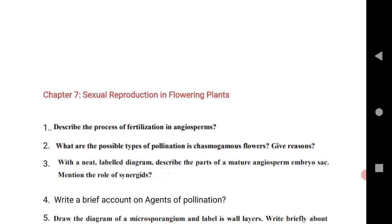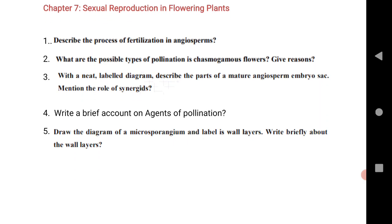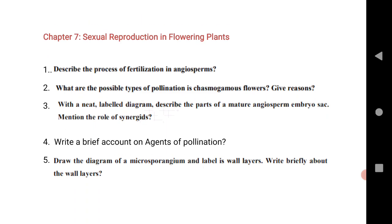Next is seventh chapter, that is common for both the states. Sexual reproduction in flowering plants. The first question is describe the process of fertilization in angiosperms. Possible types of pollination, very important question. Next third is very important, fourth, fifth. I have given five LQs here that will give you eight marks from this chapter. But this chapter sexual reproduction flowering plant, for TS you will get two LQs, for AP only one LQ.